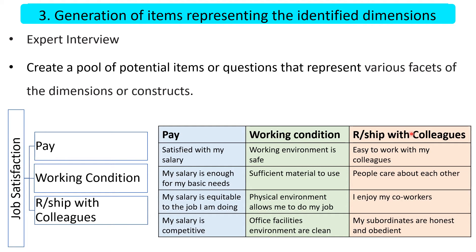Continuing with the job satisfaction example having three dimensions: for the pay dimension, items include 'satisfied with my salary,' 'my salary is enough for my basic needs,' 'my salary is equitable to the job I am doing,' and 'my salary is competitive.' For working condition: 'working environment is safe,' 'sufficient material to use,' 'physical environment allows me to do my job,' 'office facilities are clean.' For relationship with colleagues: 'easy to work with my colleagues,' 'people care about each other,' 'I enjoy my coworkers,' 'my subordinates are honest and obedient.'